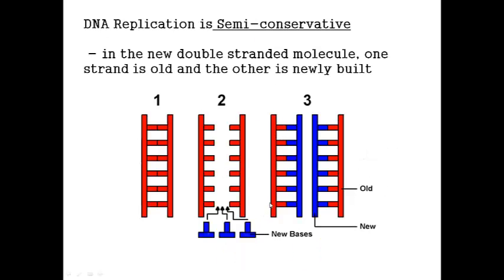DNA replication is described as semi-conservative. Semi meaning half, conservative meaning saved. This is because, here's our original molecule on the left, the new nucleotides joining in during replication to make two new double-stranded molecules. One strand of which is old from the parental DNA and the other strand is newly built. So half of the old molecule has been saved.